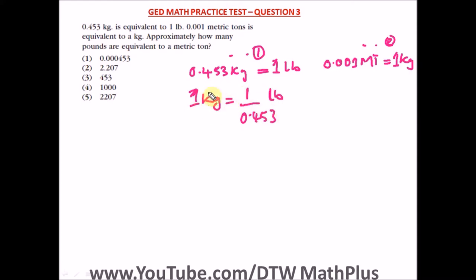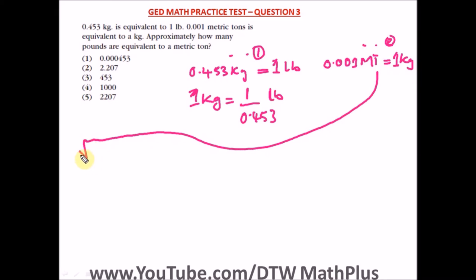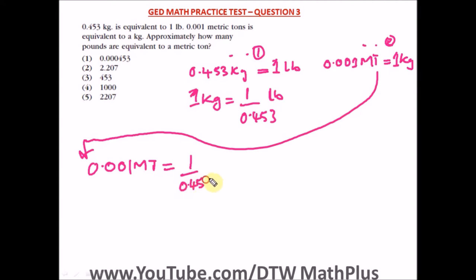So let's put in the value of 1 kg into this equation. We have 0.001 metric ton equal to — 1 kg is now 1 divided by 0.453 — pound. The question says approximately how many pounds are equivalent to 1 metric ton.